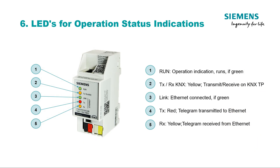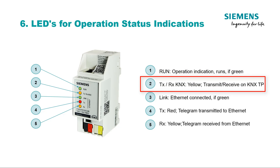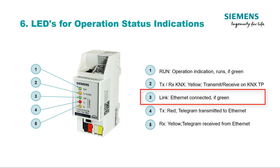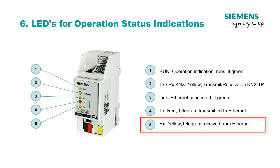LEDs for operation status indications. Five LEDs inform about the operating status of the products. The Run indicator lights green when the products are ready for operation. TX-RX-KNX lights yellow when KNX telegrams are sent or received on the twisted pair side. The Link LED lights green when the Ethernet connection is active. TX lights red when telegrams are being sent on Ethernet. RX lights yellow to indicate receipt of Ethernet telegrams.